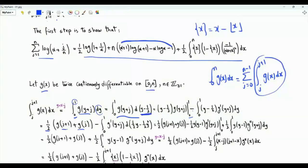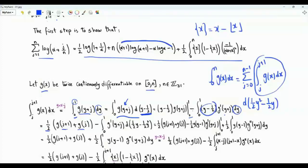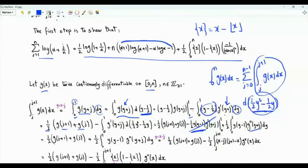Then we have minus the integral of y minus one half times the first derivative of g. Let's do integration by parts again. We can write this part as d of one half y squared minus one half y. When we use the limits of integration, we get 0 when y is 0 and when y is 1, so this term goes away. We also have the integral of one half y squared minus one half y multiplied by the second derivative of g.